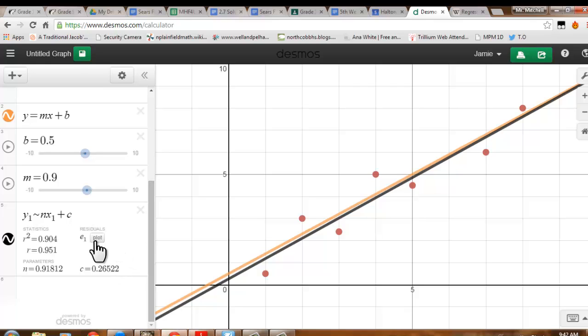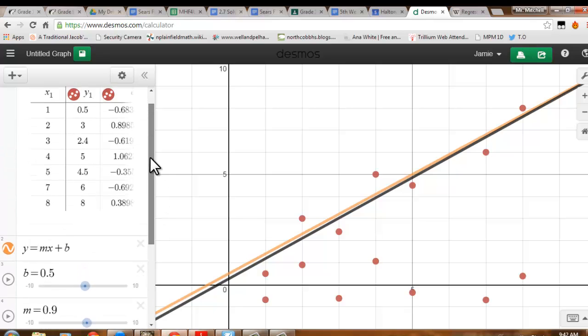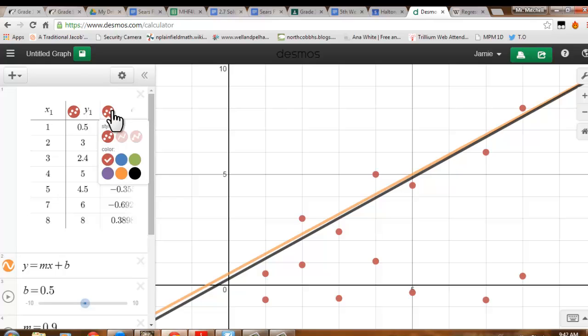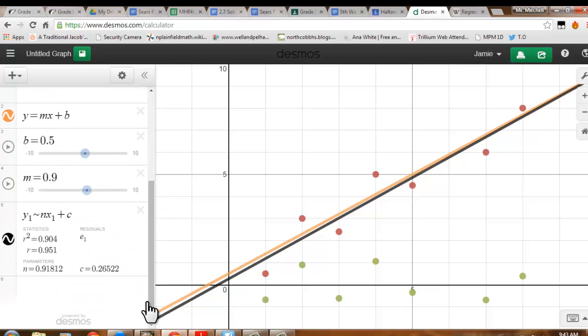Another interesting piece of data to look at is something called the residuals, which I can plot. I'm just going to change their color so it's not as confusing, and I can do that by clicking and holding on the value e1 in my table values. I'm going to color them green. The residuals just show how close to accurate these points are. The closer these points are to the x-axis, the better. If I had a perfect line of best fit, all of these points would be right along the x-axis.